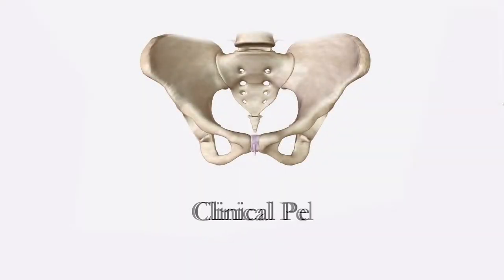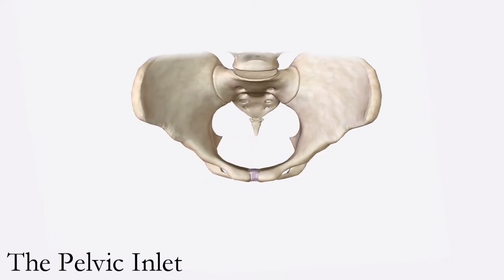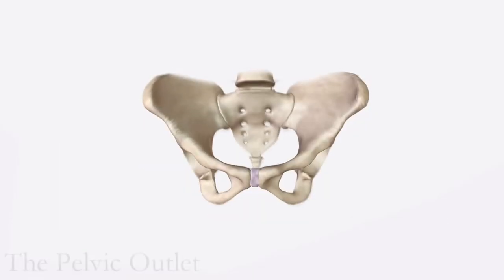The first thing we need to do is introduce ourselves to the patient and establish rapport. Explain what procedure will be done and why it is important. Clinical pelvimetry must be assessed in order to know the dimensions of the pelvic inlet, mid-pelvis, and pelvic outlet, since these will serve as the passageway of the baby. After explaining this, ask the patient to empty her bladder and remove her undergarment.